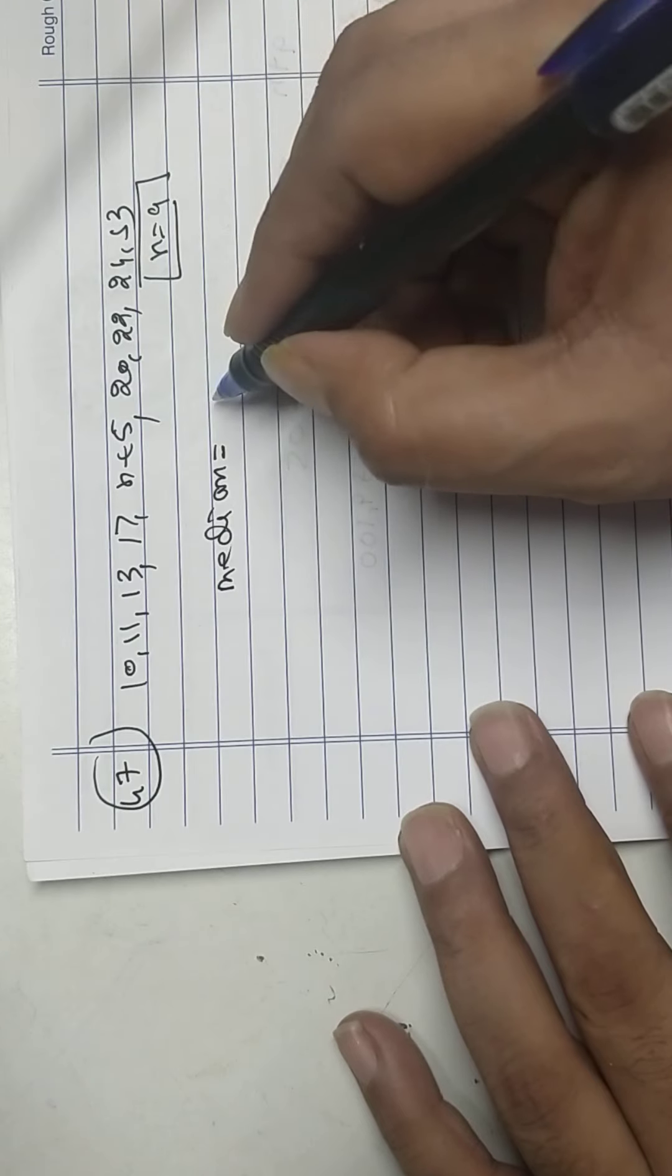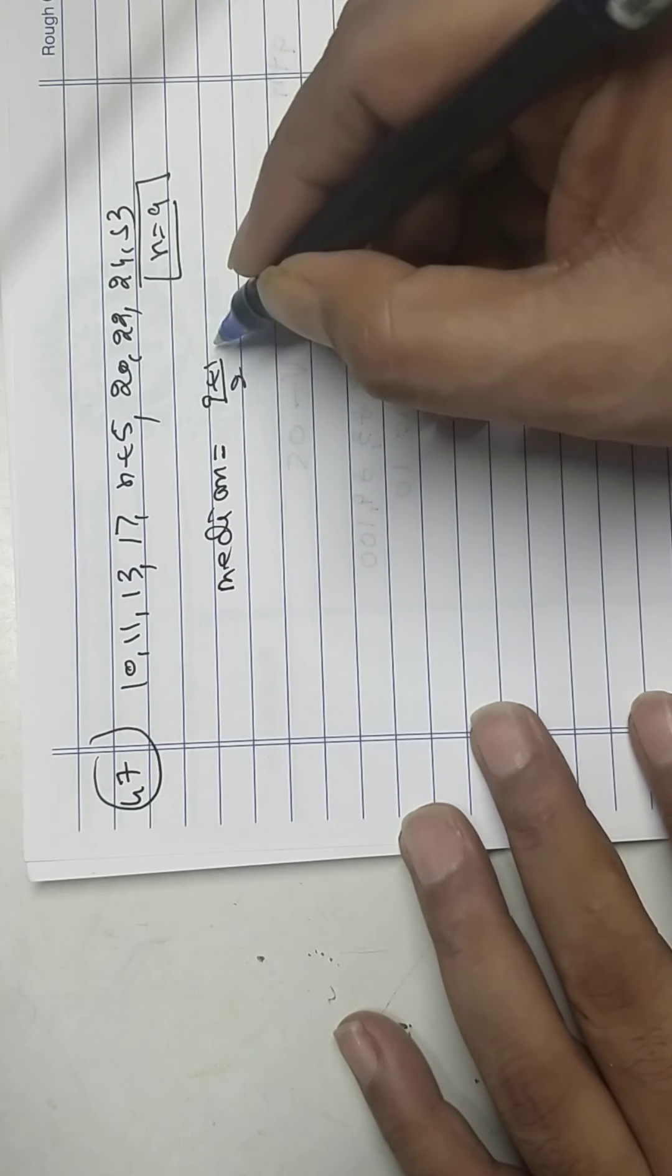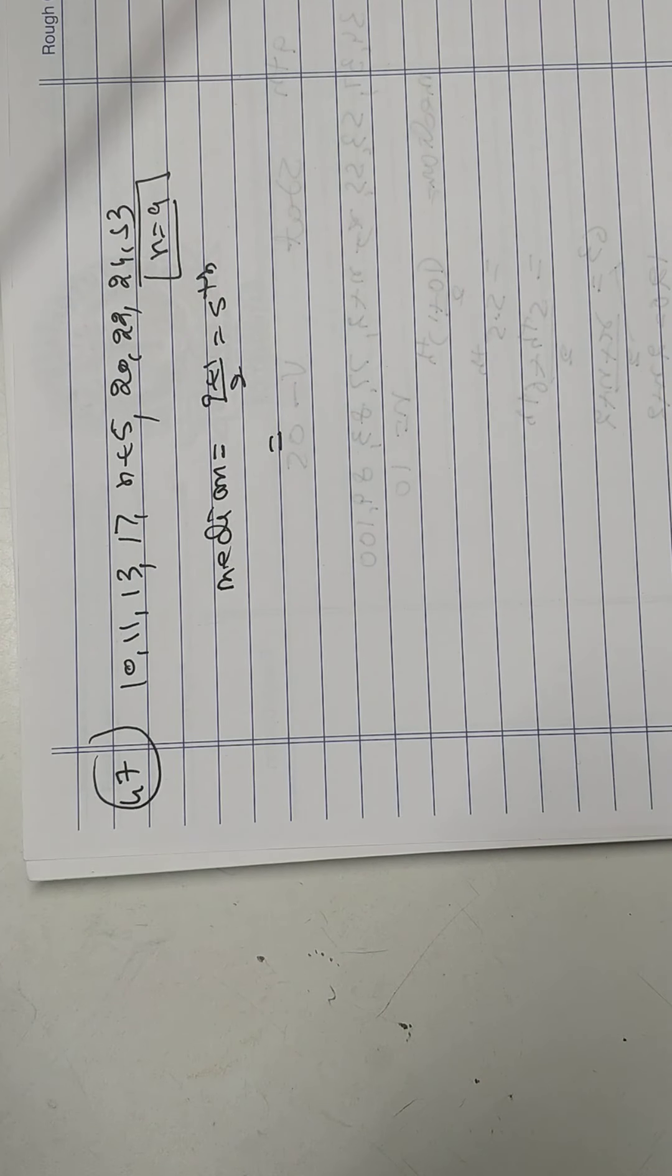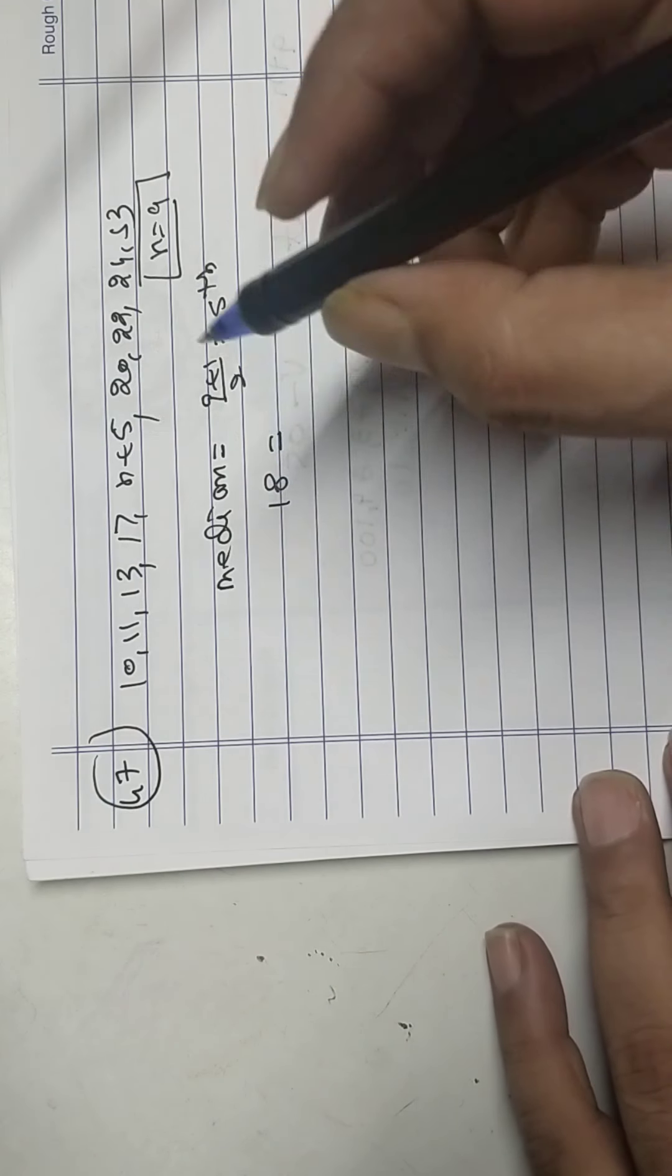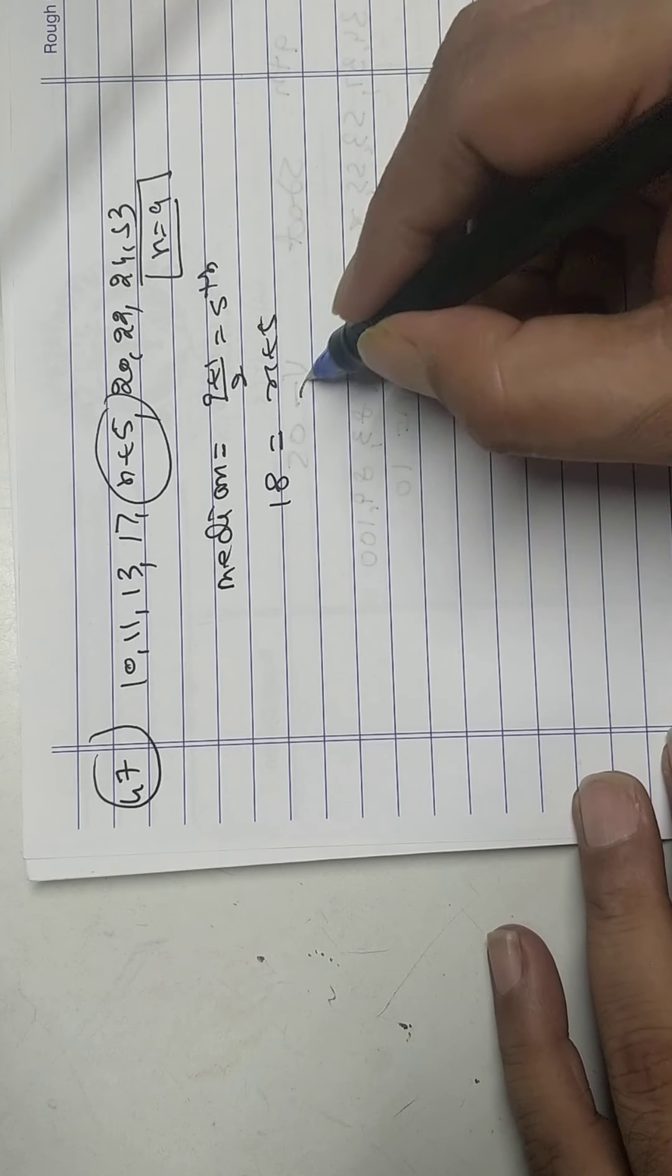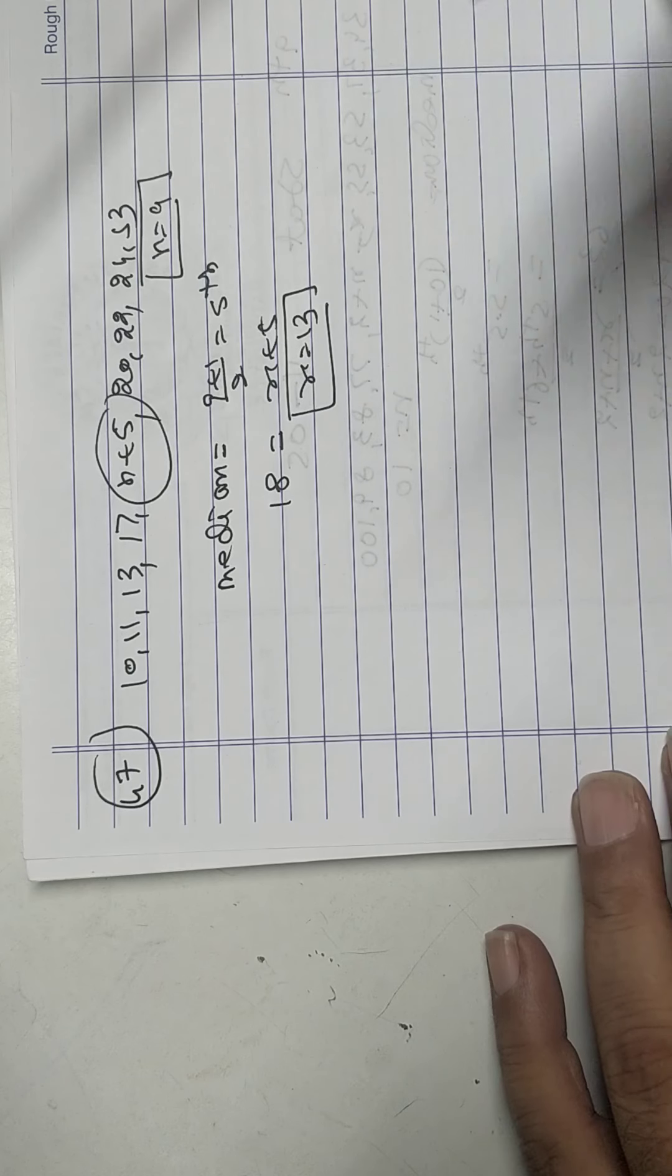Median n plus 1, so 9 plus 1 upon 2, that is 5th number. Median already they have given 18, and 5th number is x plus 5. So x equals 13.